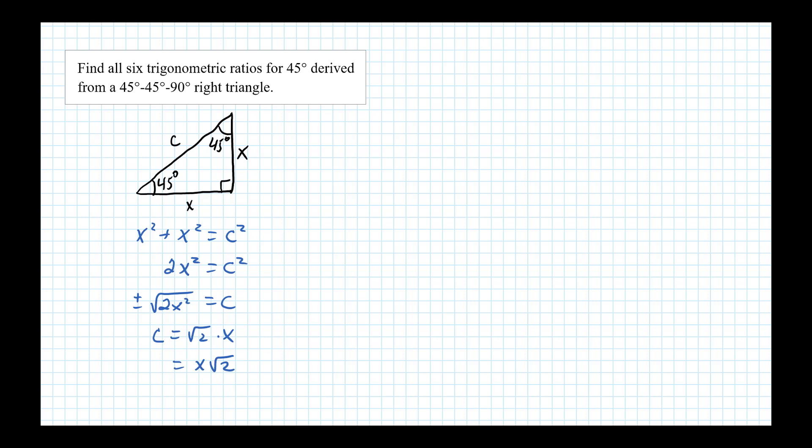Okay, so I'll use that for the hypotenuse here. So x square root of 2, now we can find all six trig ratios.